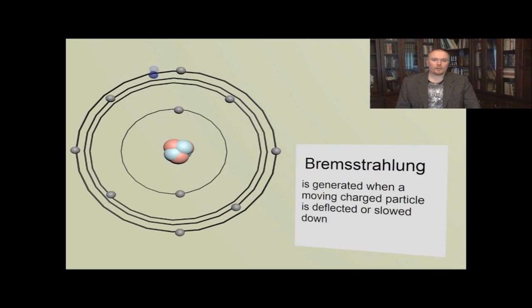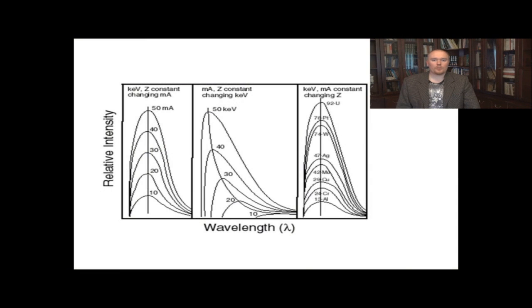Bremsstrahlung is a form of x-ray radiation which is generated when the accelerated electrons slow down when interacting with the atoms of the anode. The energy of this radiation is very broad, and the intensity and energy of the radiation depends on the accelerating voltage, the filament heating current, and the anode material.